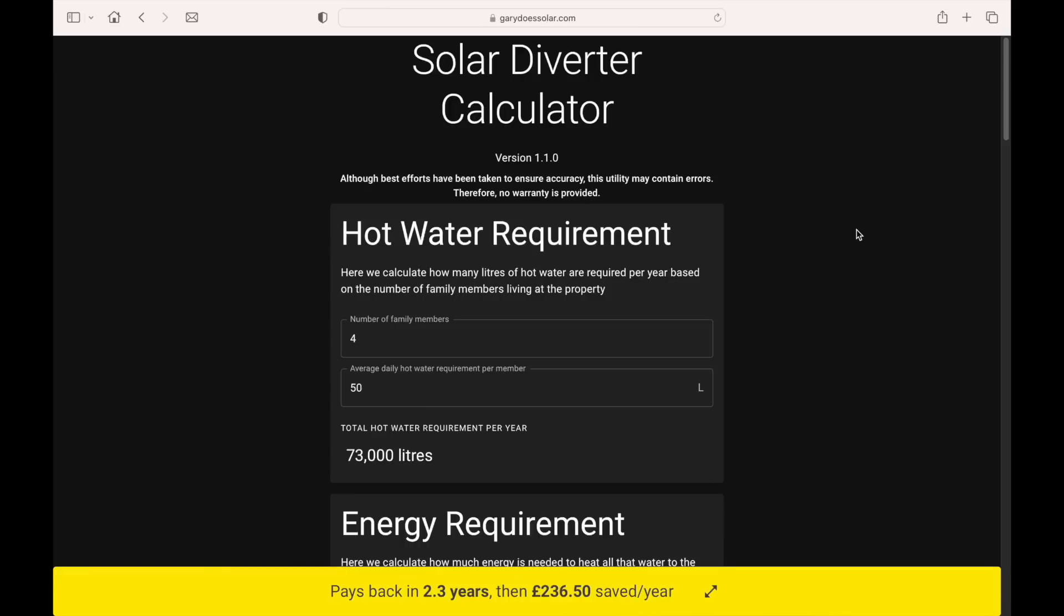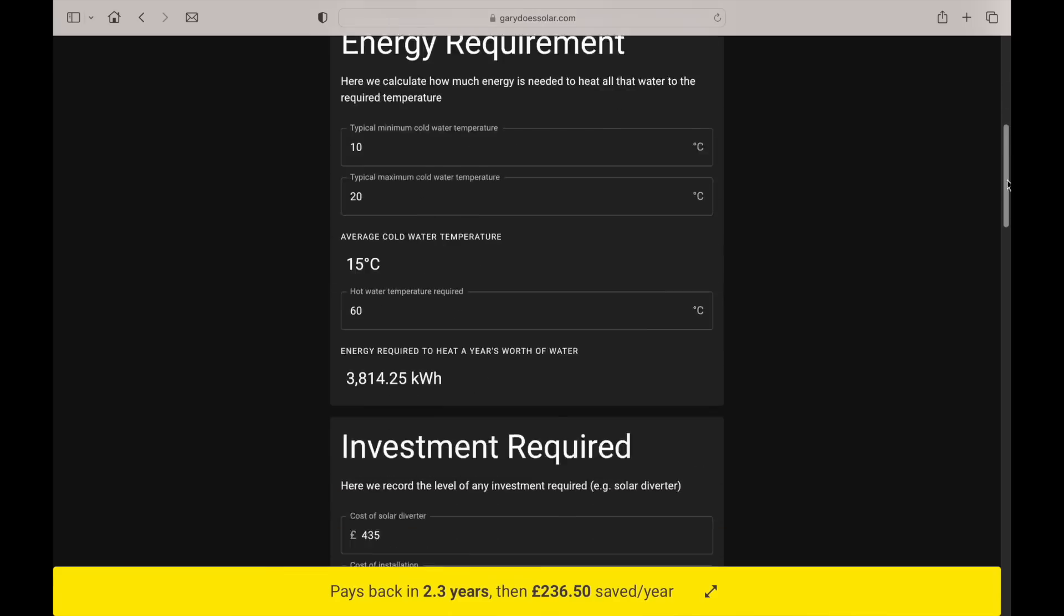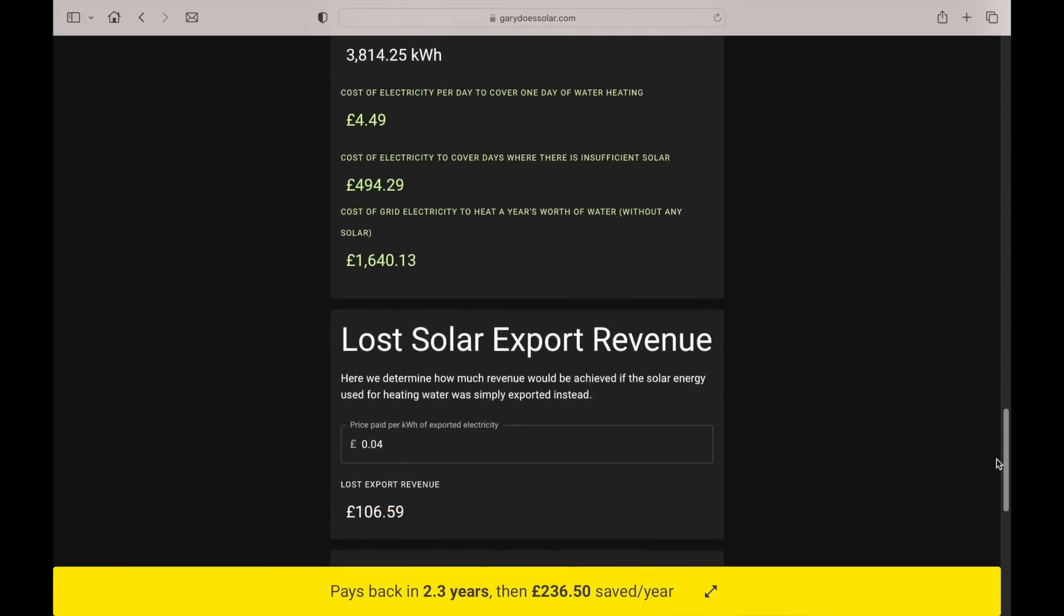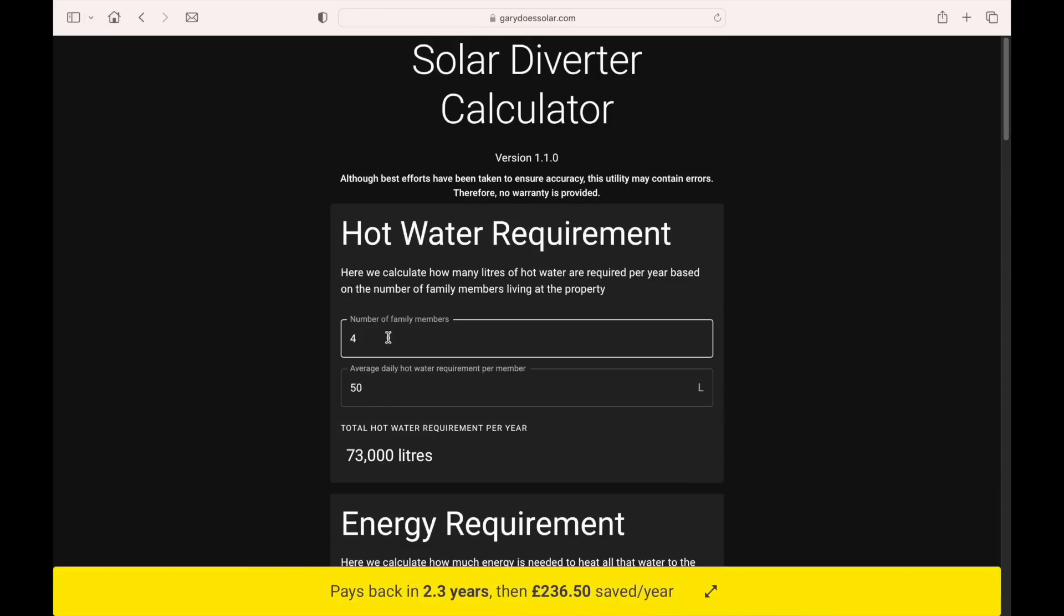When I released my solar diverter video, I also provided a utility to go with it. You can quickly try out that utility on any mobile device by simply scanning this QR code. You can also access it via the link in the description. The utility allows you to calculate how long it will take to get payback on a solar diverter, based on a number of criteria. It defaults to a family of four, with an average usage of hot water.